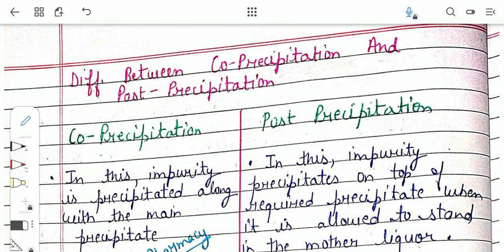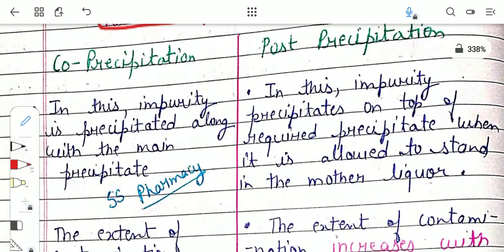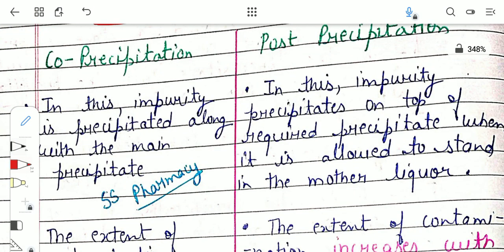Hello everyone. In this video we will be talking about the difference between co-precipitation and post-precipitation. We have discussed both of these topics in detail in the previous video — they are a kind of impurity in the precipitate in gravimetric analysis. In this video we will see the difference between these two.